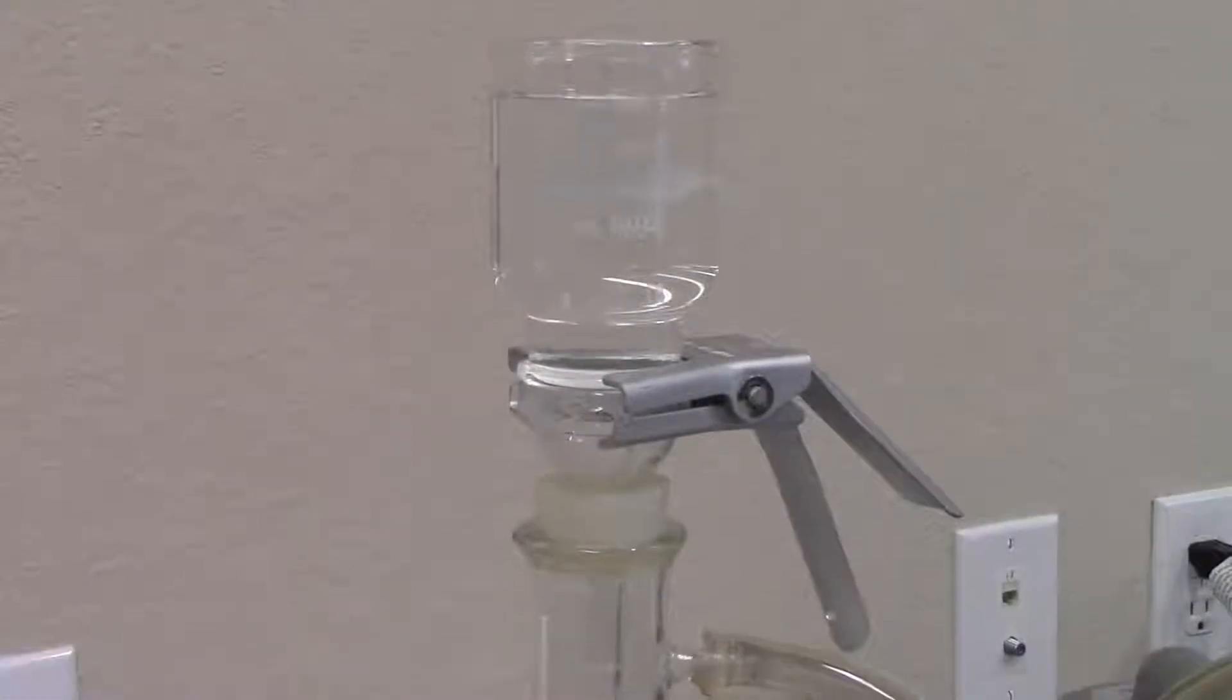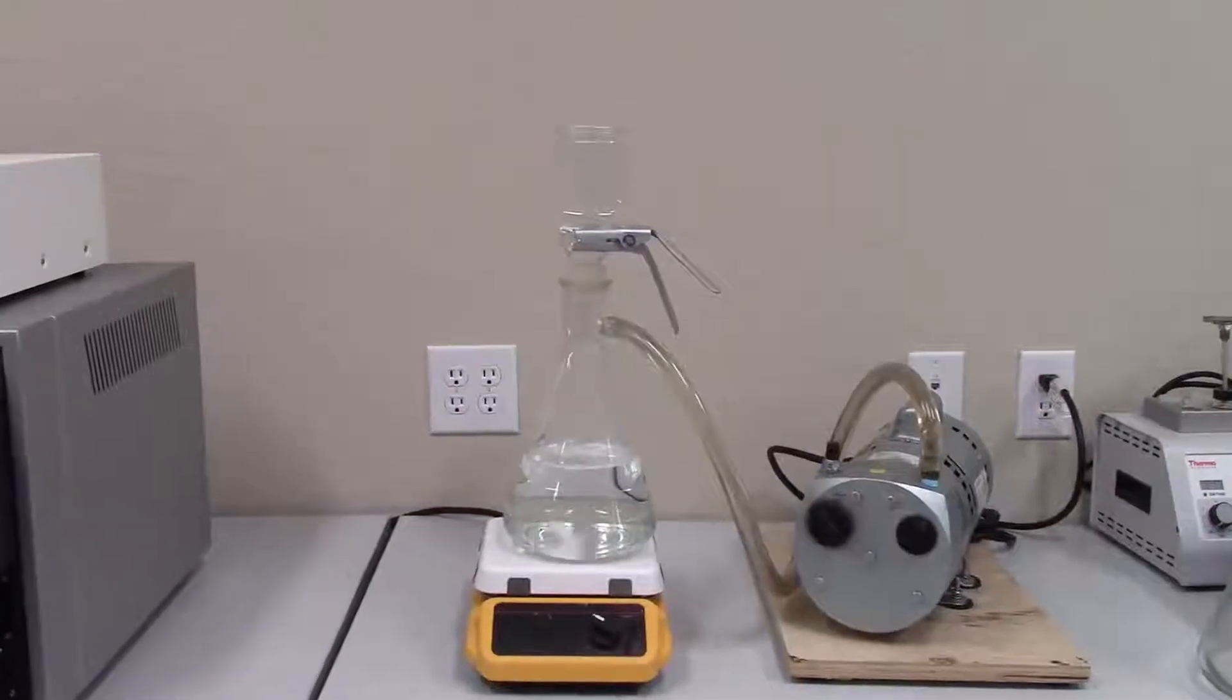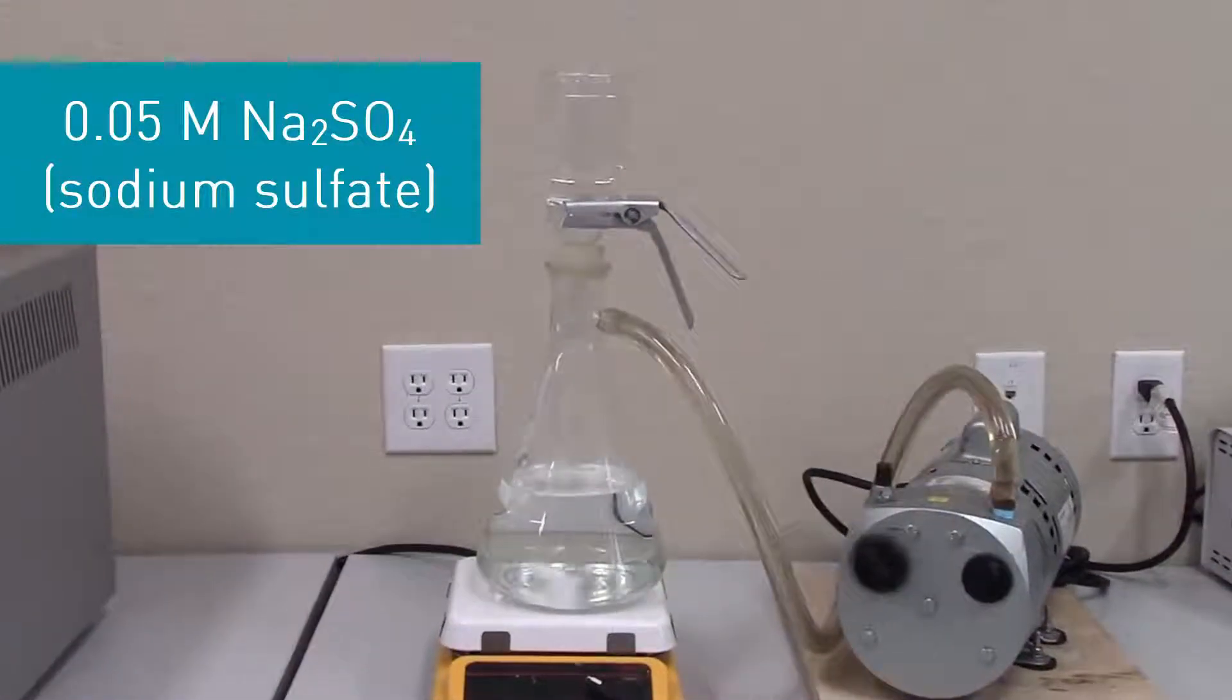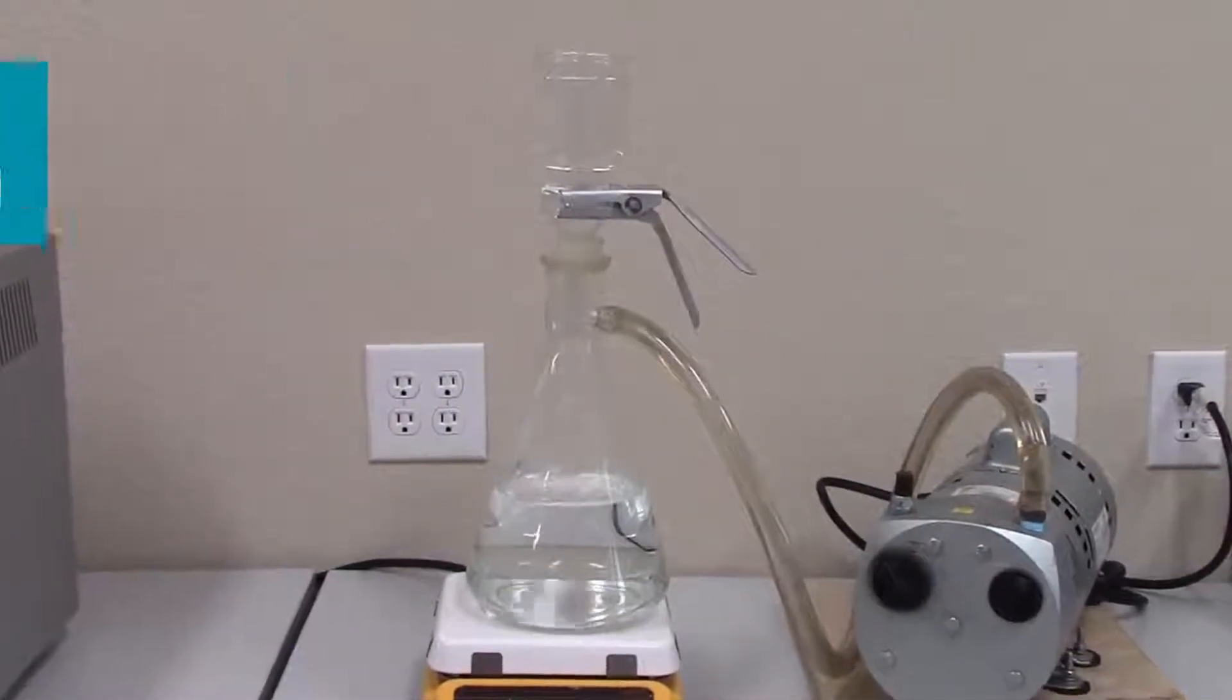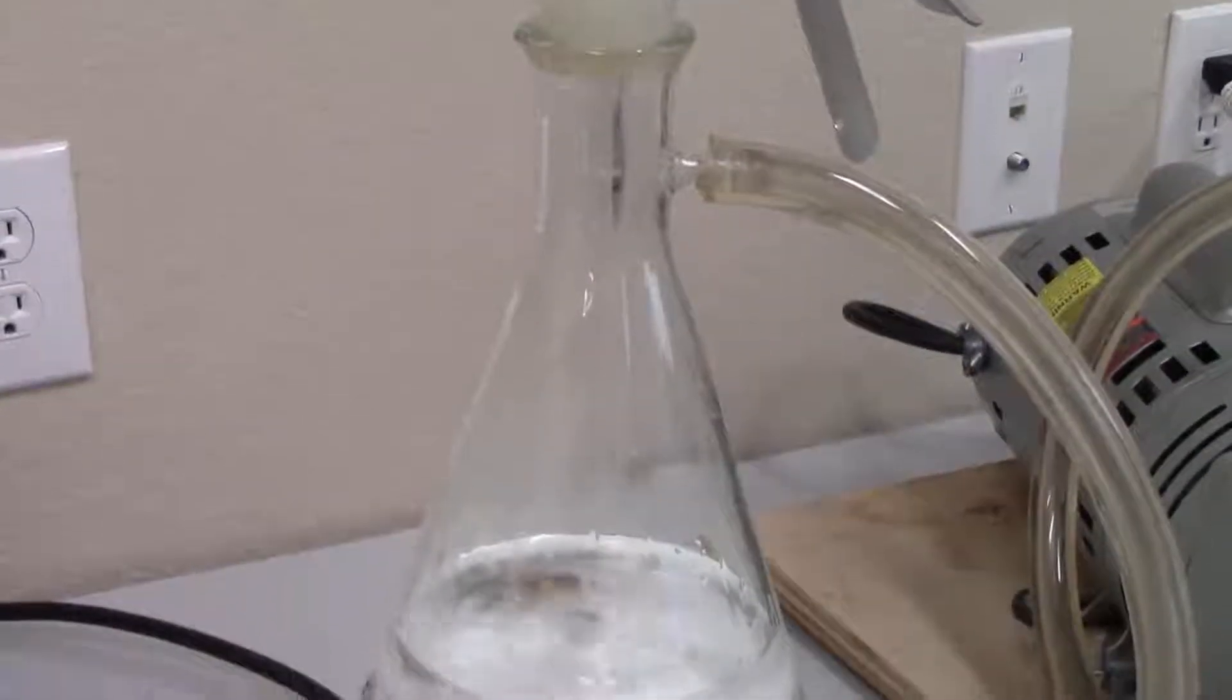This video will demonstrate how to prepare and vacuum filter a mobile phase. As an example, I will prepare a solution of 0.05 molar sodium sulfate, an aqueous mobile phase containing salt, but the procedure presented here is also applicable for organic-based mobile phases.